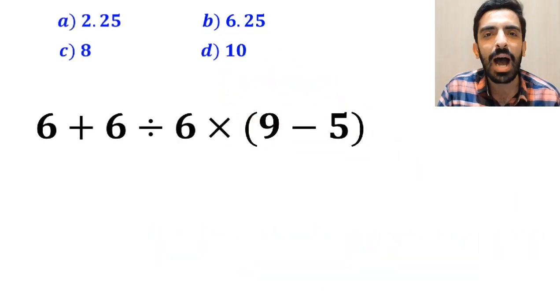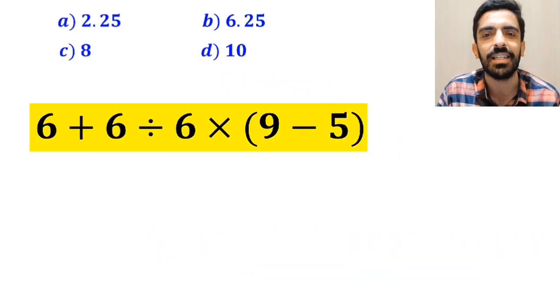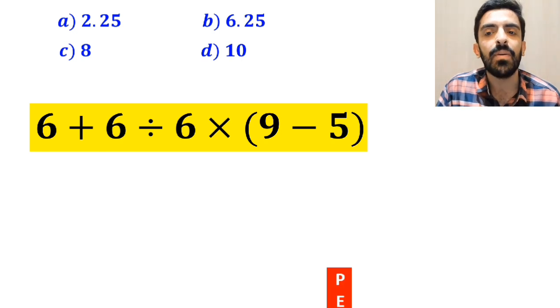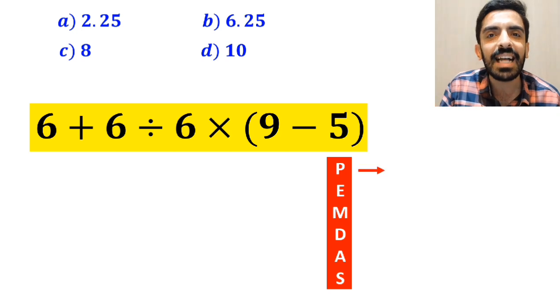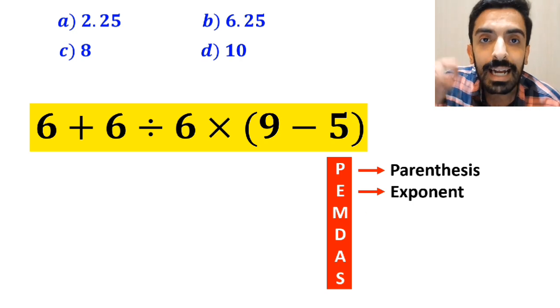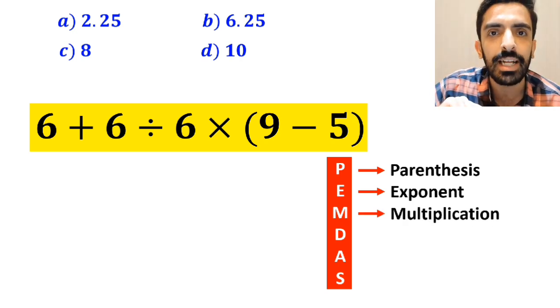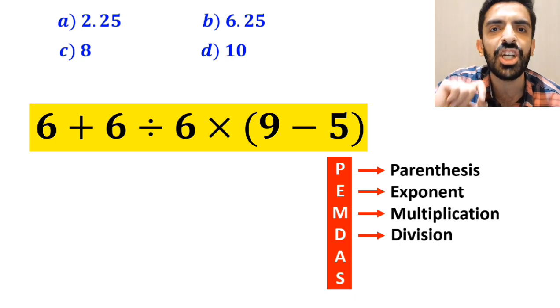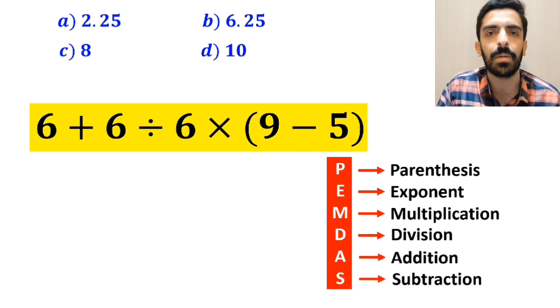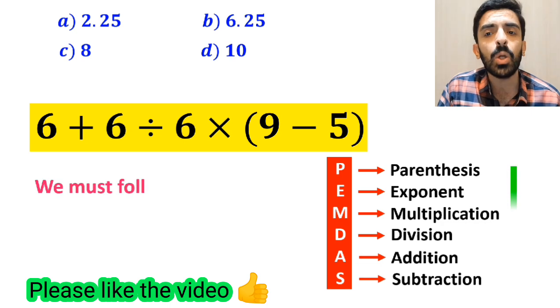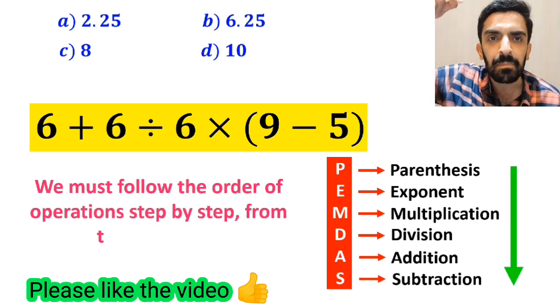Now, let me show you how to solve this expression properly. To solve this problem, we must follow the PEMDAS rule. In this rule, P stands for parenthesis, E stands for exponent, M stands for multiplication, D stands for division, A stands for addition, and S stands for subtraction. We must follow the order of operations step by step from top to bottom.